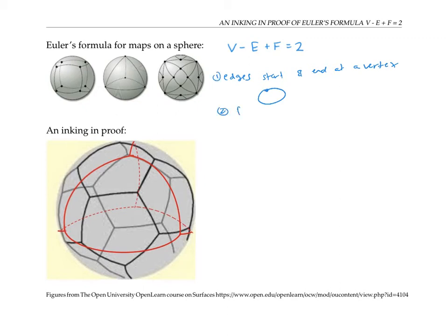And also, the faces have to be topologically disk-like. In other words, you can't have a map on the sphere where one of the faces is a cylinder, like this middle face here.